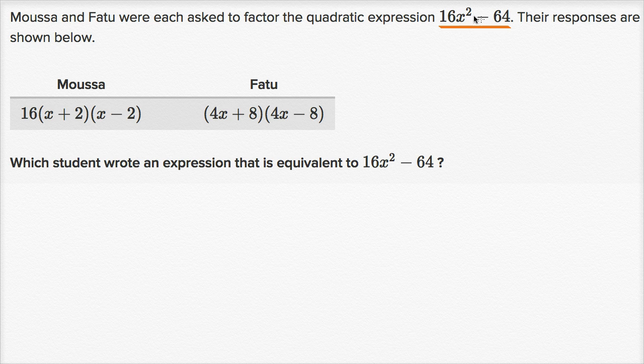Let's see if first we can factor this out somehow to get what Moussa got. It looks like Moussa first factored out a 16 and then he was left with a difference of squares. So let's see if we can do that. We can write our original expression 16x squared minus 64 as 16 times x squared minus 16 times four.